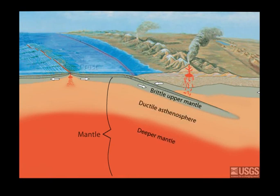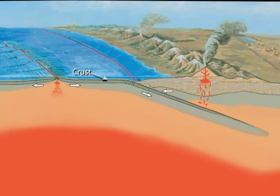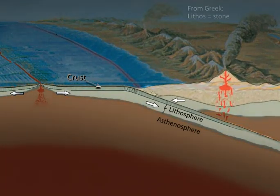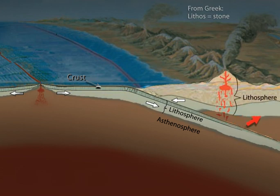Earlier, we mentioned that the crust is merely the top of the tectonic plate. This uppermost brittle mantle behaves much like the overlying crust, and together they form a rigid layer of rock called the lithosphere that moves in unison. The lithosphere ranges from as much as 100 kilometers thick in the oceanic plate to 200 kilometers thick in the continental plates.